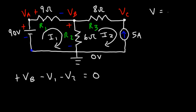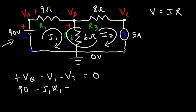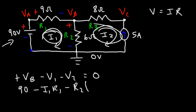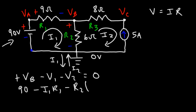Voltage equals current times resistance according to Ohm's law. VB is equal to 90. V1 is going to be I1 times R1. V2 is the current that flows through R2 times R2. The current that flows through R2 is really the difference between I1 and I2 — we have I1 going down and I2 going up, so the actual current through resistor 2 is I1 minus I2.